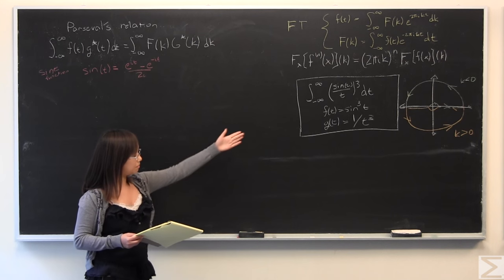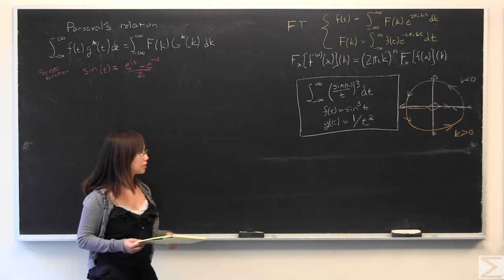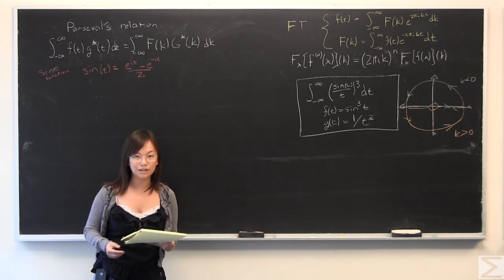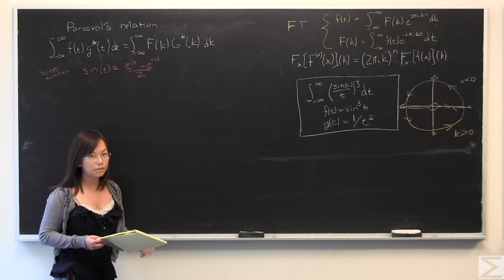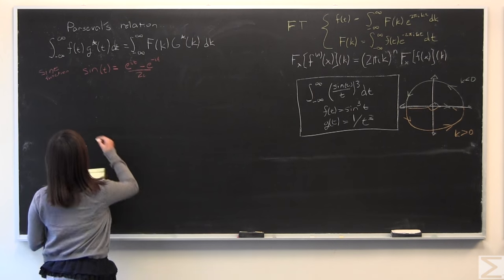So I guess I'll start by finding the Fourier transform of f(t), which I've decided was sine cubed of t. And that is necessary for the left part of both these sides, and I'll start by writing this.